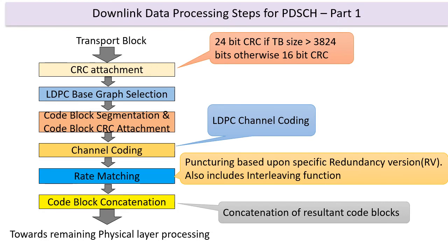If we look at the processing chain on the radio, we have very similar steps as in LTE. We start with the transport block, then we go through a bunch of things which look very similar. The first difference that we would notice is that the coding is not turbo coding for the data — it is actually a new code called LDPC.